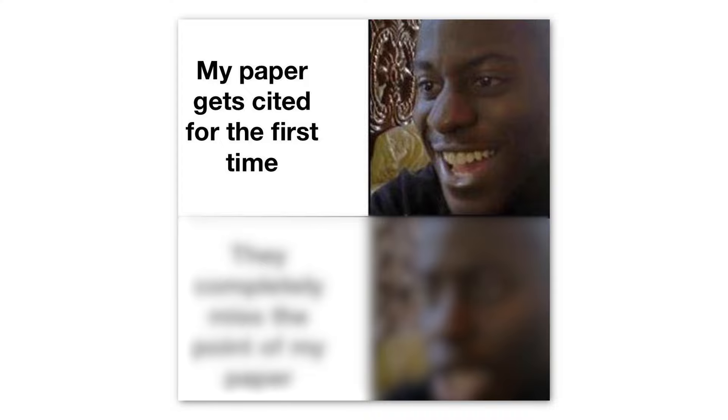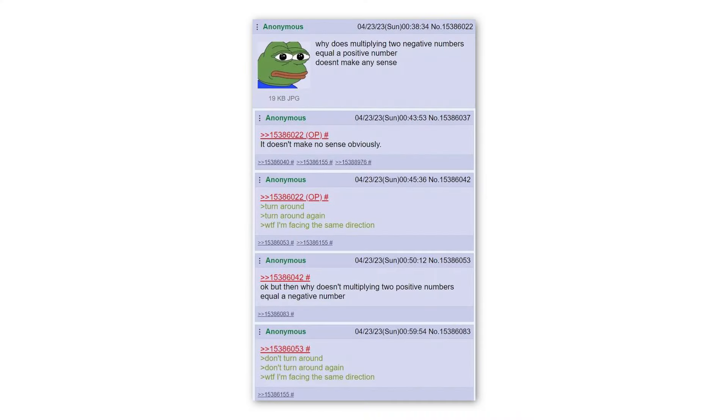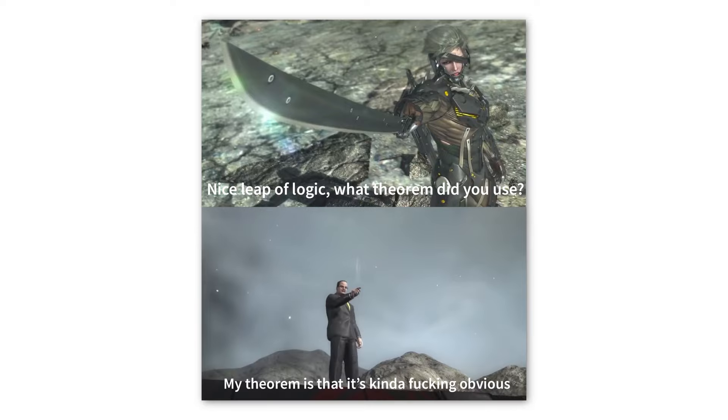My paper gets cited for the first time. They completely miss the point of my paper. Why does multiplying two negative numbers equal a positive number doesn't make any sense? It does not make no sense, obviously. Turn around. Turn around again. What the fuck? I am facing the same direction. Okay. But then why does not multiplying two positive numbers equal a negative number? Do not turn around. Do not turn around again. What the fuck? I am facing the same direction. Nice leap of logic. What theorem did you use? My theorem is that it is kind of fucking obvious.